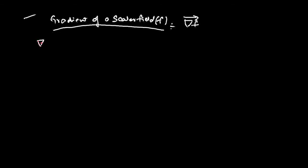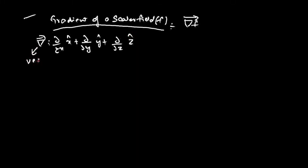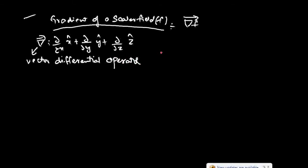What is del bar? Del bar is ∂/∂x x̂ plus ∂/∂y ŷ plus ∂/∂z ẑ. Del bar is called the vector differential operator. It is similar to small d for scalar fields — small d is referred to as the scalar differential operator, while del bar is referred to as the vector differential operator.